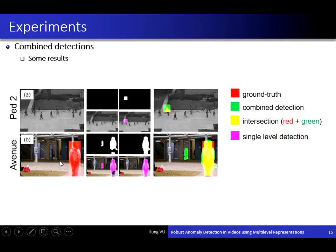In the second row, we have a large anomaly object. The low-level detector can detect it but the result is fragmented. The high-level detector can detect it correctly. Combining the low-level and high-level detections, we obtain a result without fragmentation.